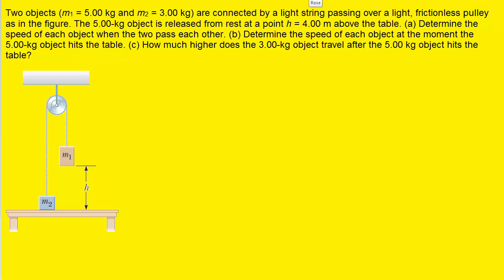The key to solving part A, which asks us to determine the speed of each object when the two pass each other, is to understand that when the two objects pass each other, they're going to be located at this level right about here. Mass 2 has to travel upward a distance equal to half of this height, and mass 1 has to travel downward also by a distance equal to half of that height. In other words, when the two objects pass each other, their final height is going to be half of the value of the original height.